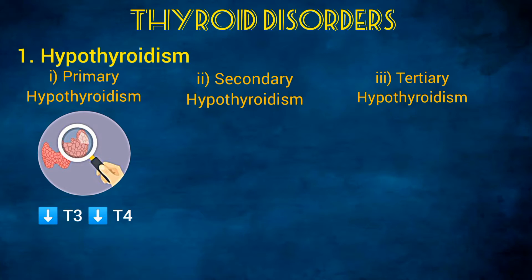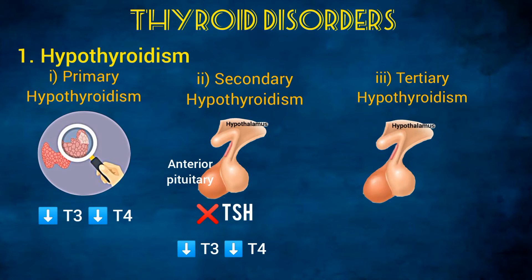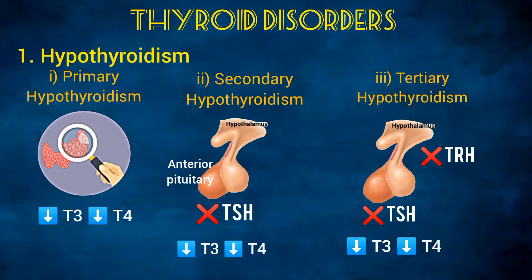When the thyroid gland is normal but receiving insufficient stimulation because of low levels of TSH from the pituitary, the problem is in the pituitary gland and it is known as secondary hypothyroidism. In tertiary hypothyroidism, the problem is in the hypothalamus, so there is inadequate secretion of TRH, leading to insufficient secretion of TSH, which in turn causes inadequate thyroid stimulation.